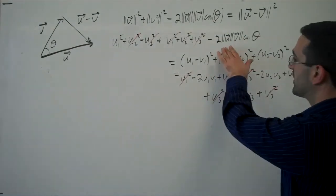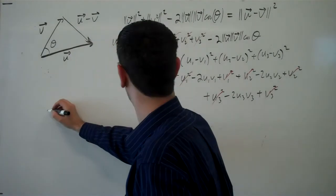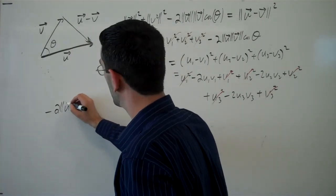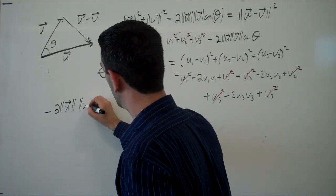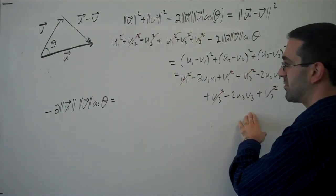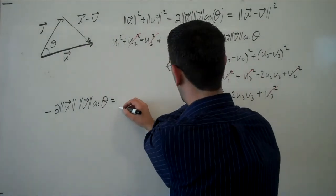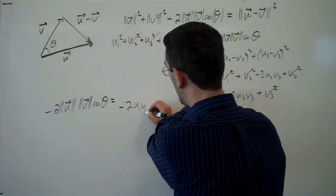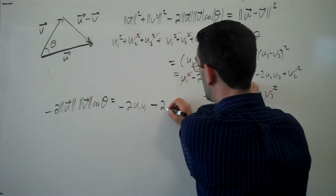on the left, I'm left with negative 2u1v1 minus 2u2v2 minus 2u3,